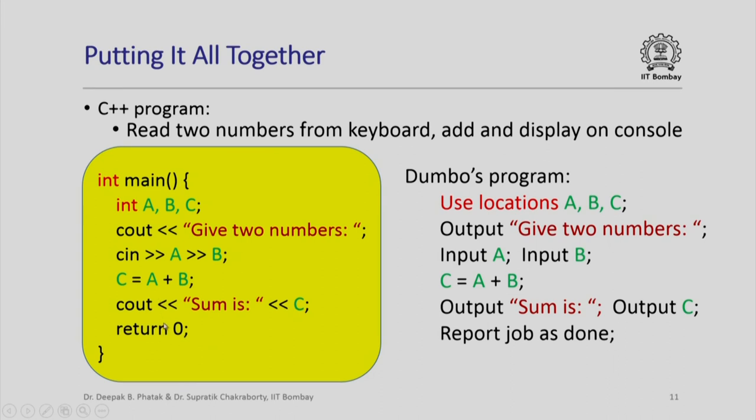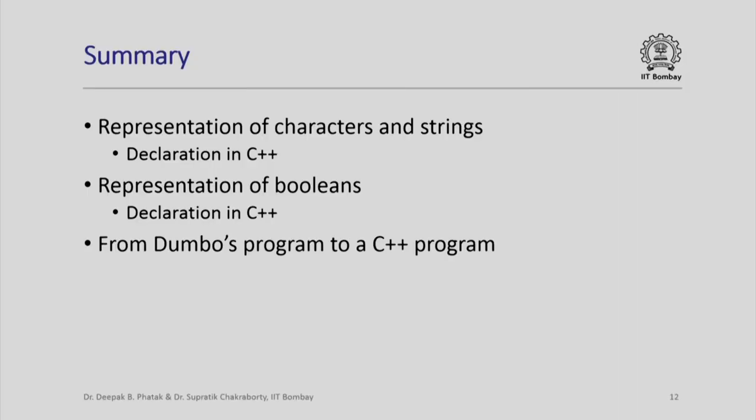We will see more about each part of the program later, but this is just to give you a glimpse of our very first C++ program. In summary, we saw the representation of characters and strings and their declaration in C++, the representation of Booleans and their declaration in C++, and an example of how we can go from a Dumbo program to a C++ program. Thank you.